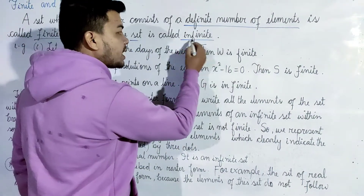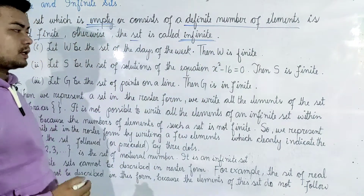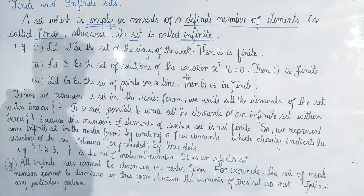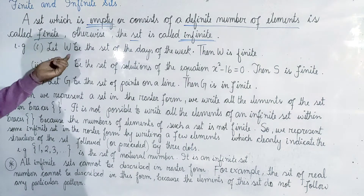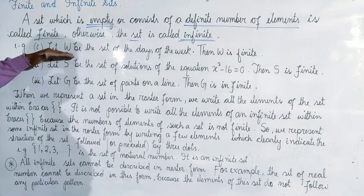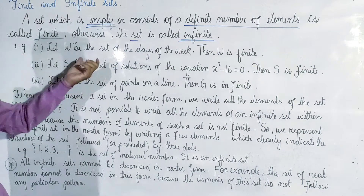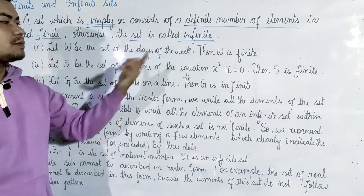Here is an example: the set of all the days of the week. This is a finite set since the days of the week are a definite number of elements.